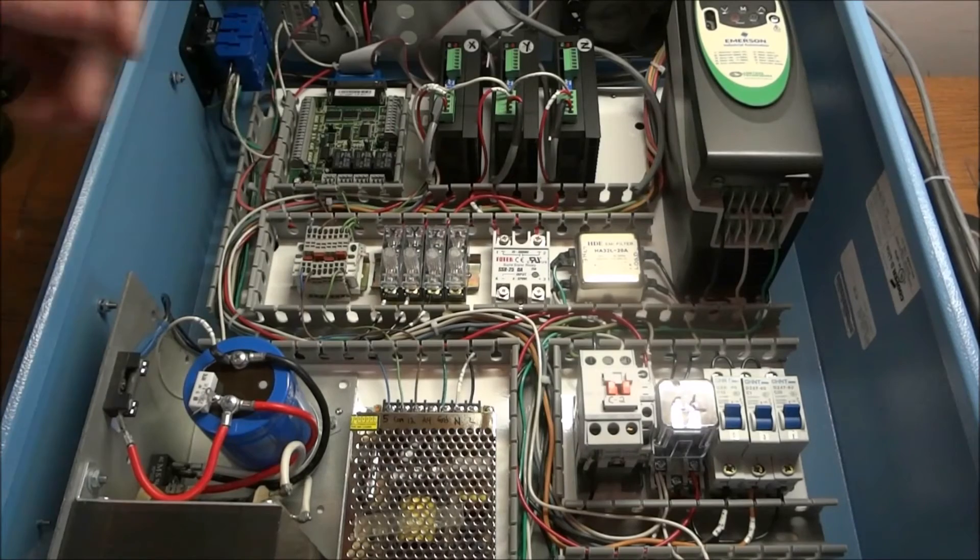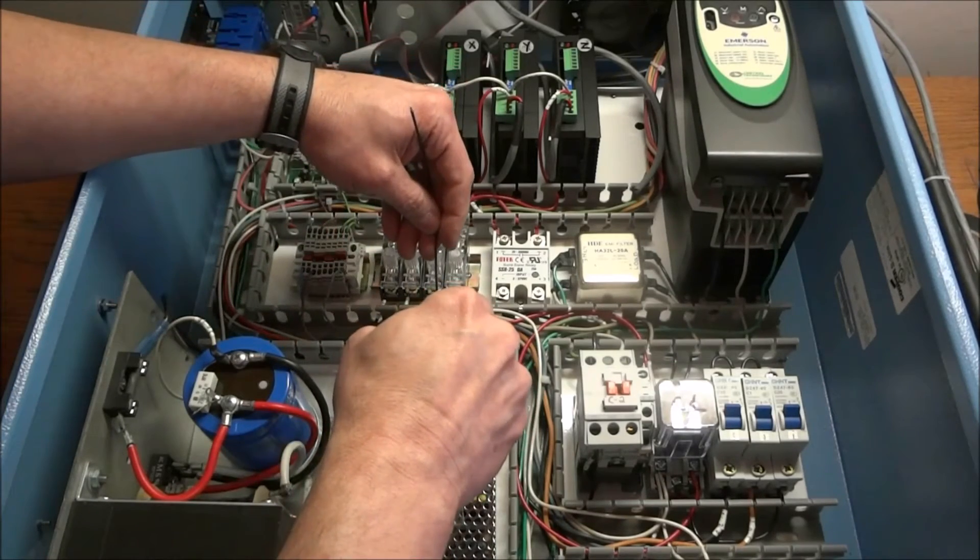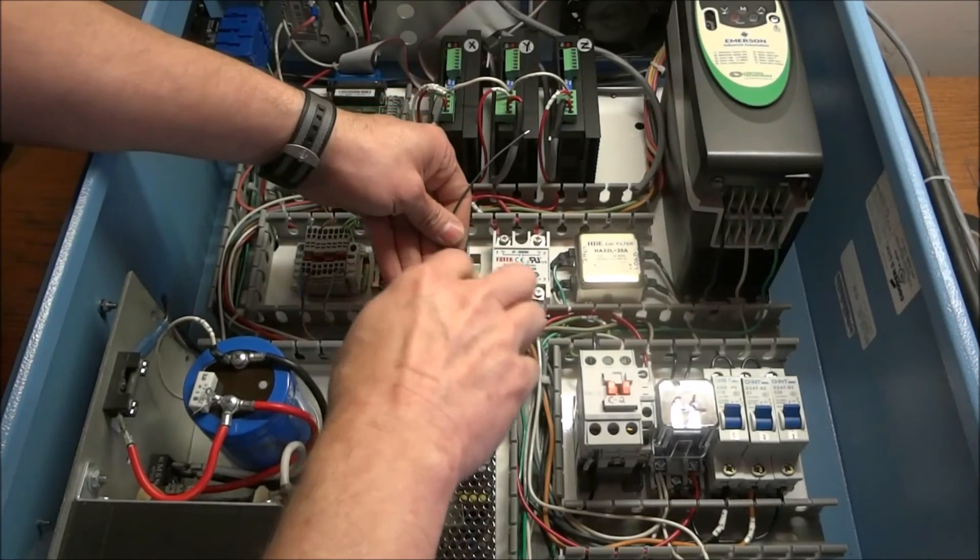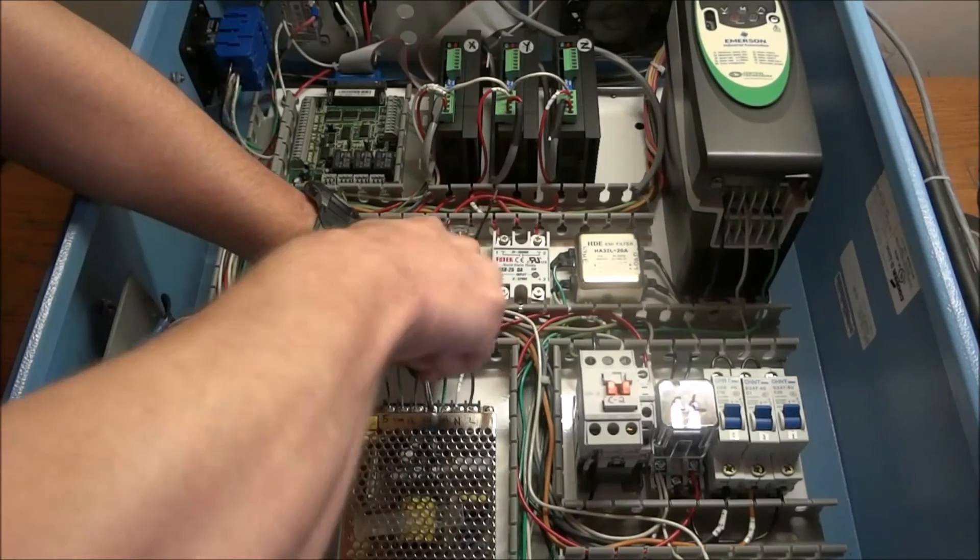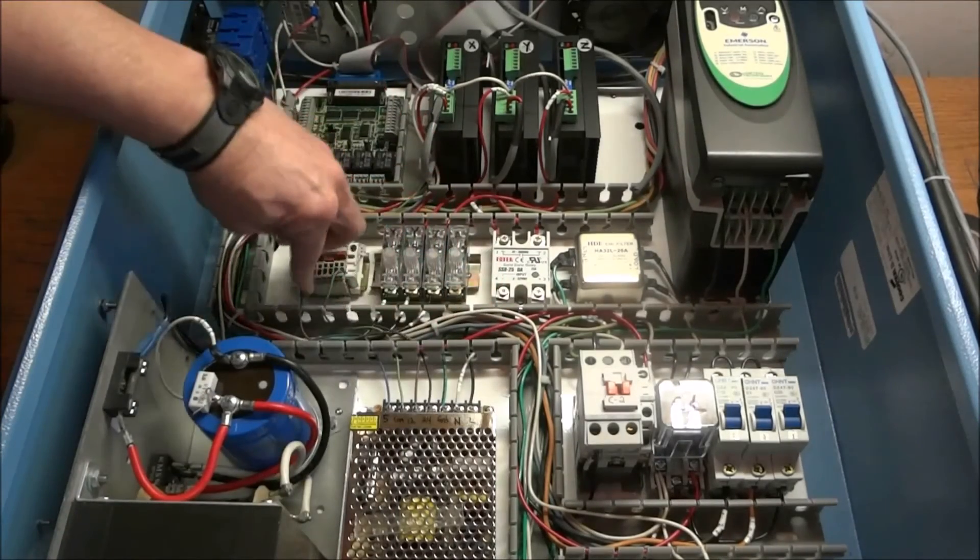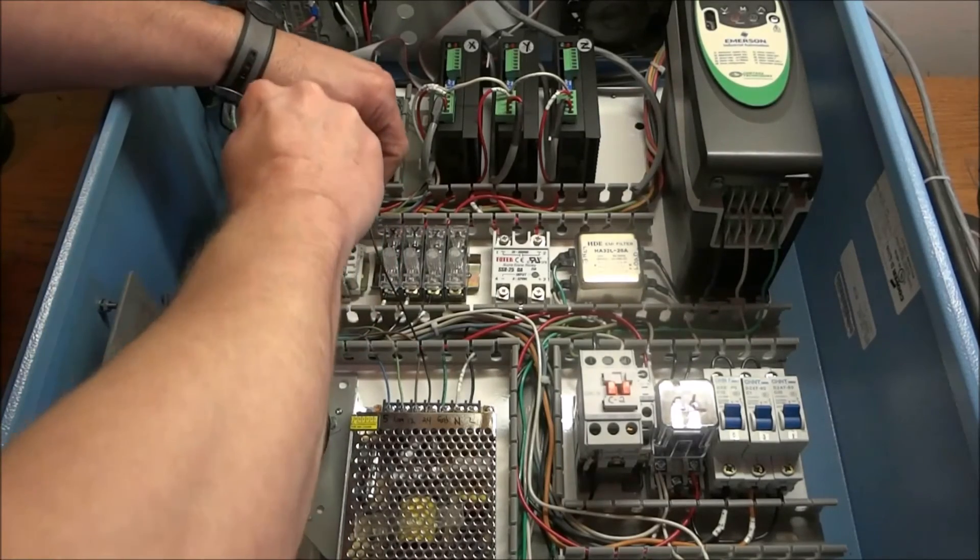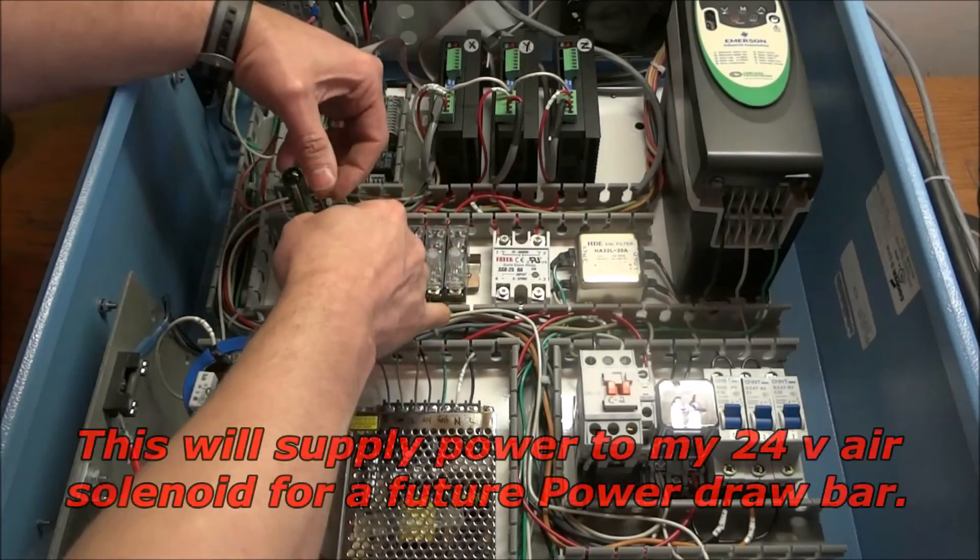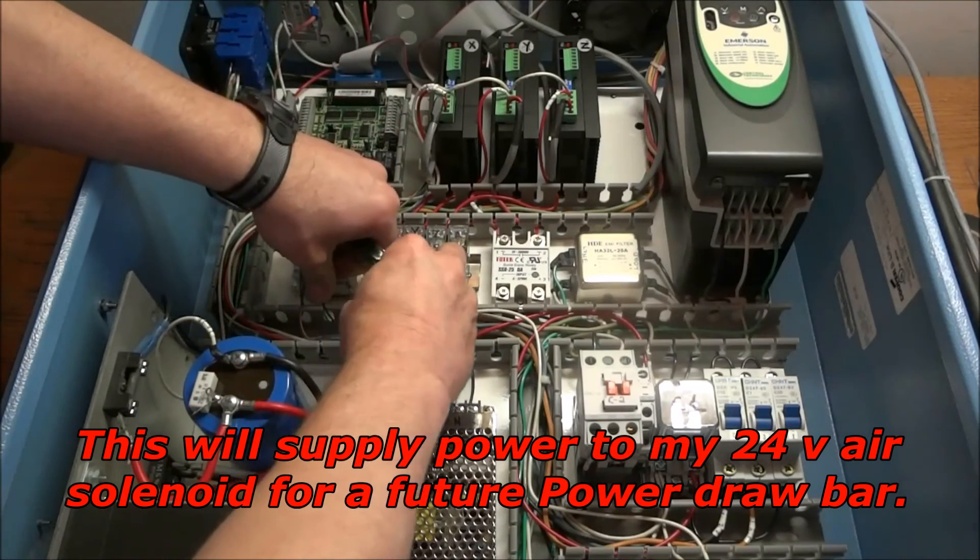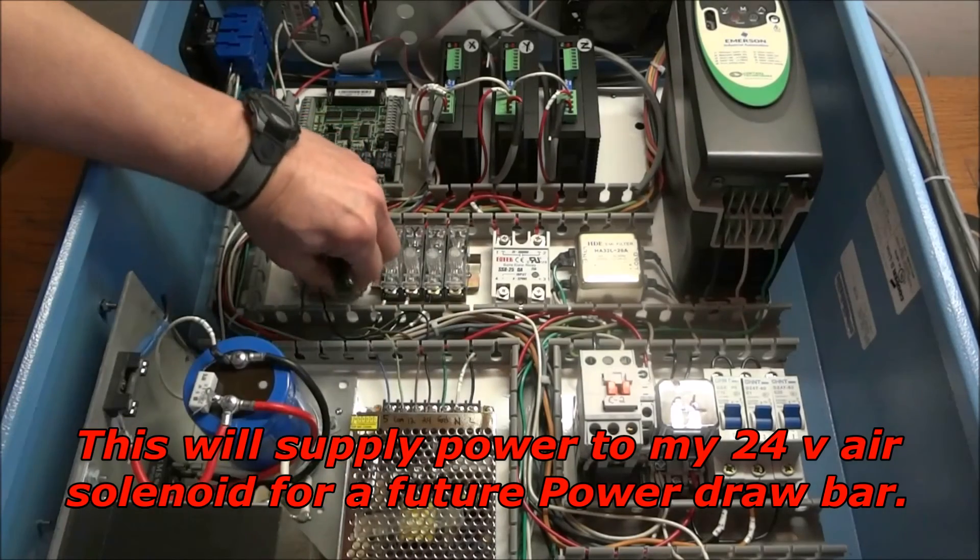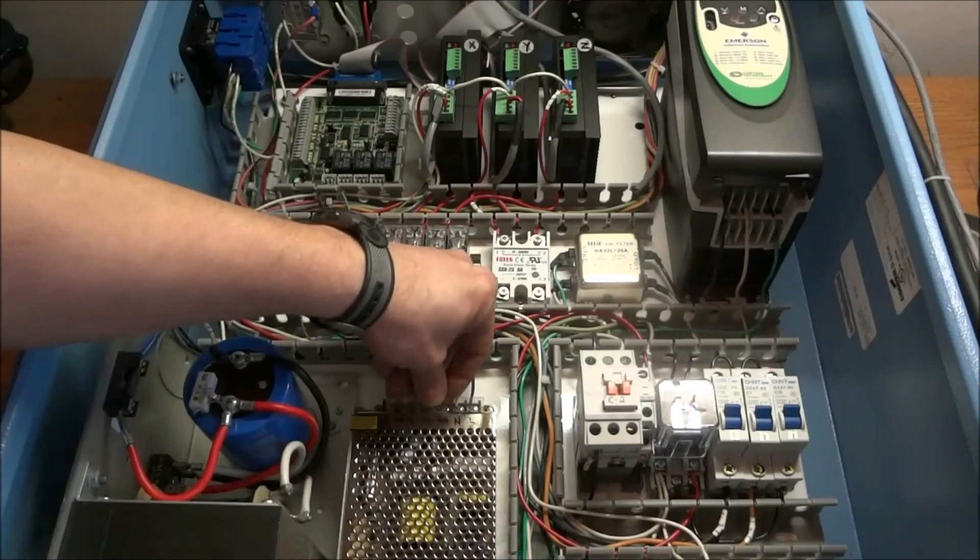And then last is our 24 volts. I'm using the black wire here. And I'm going to just land this right here on my terminal board. And then that takes care of our wiring for our TriPower power supply.